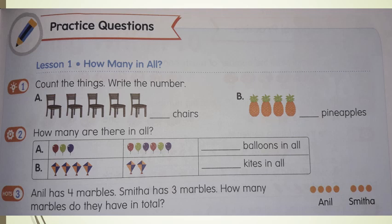Let's move to content book page number 29. You can see lesson 1. Question number 1, count the things and write the number. You have to count the things and write the number. Second question, how many are there in all? You have to just count and write the number there. Third question: Anil has 4 marbles, Smitha has 3 marbles. How many marbles do they have in all? You have to write the answer by yourself.